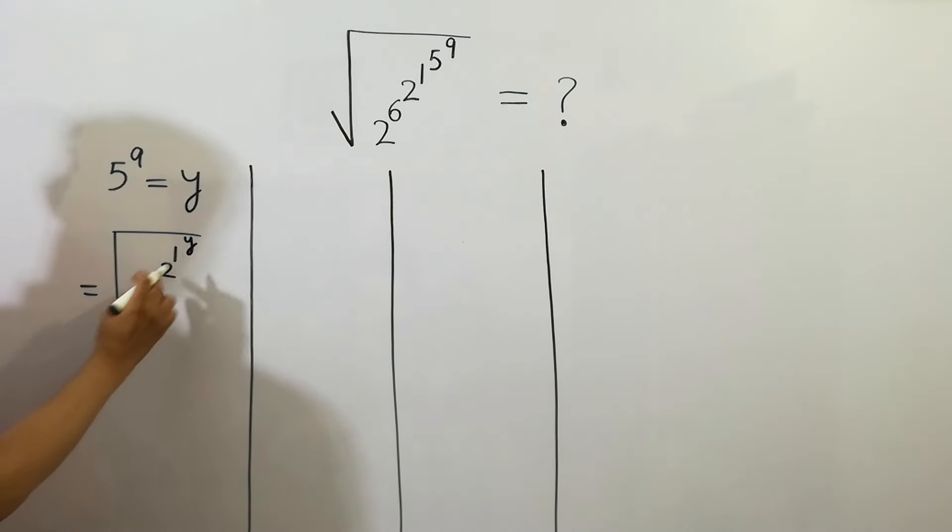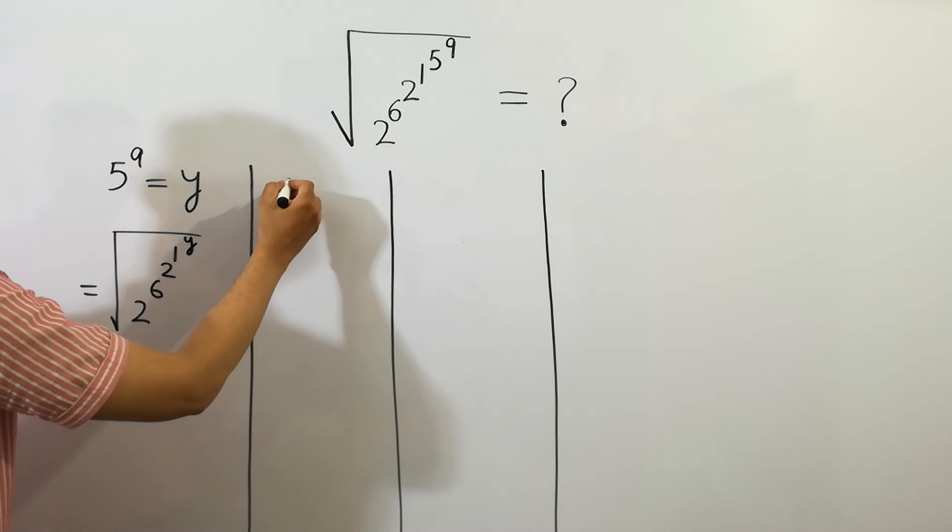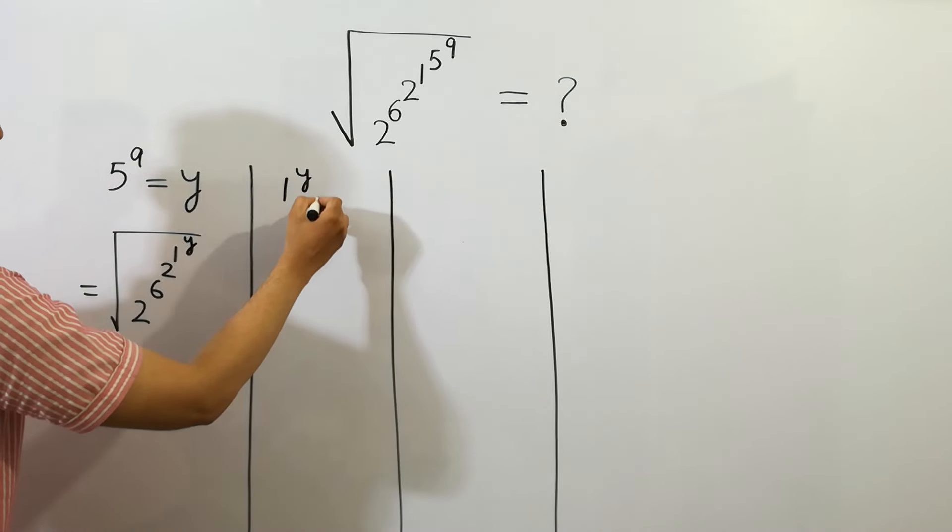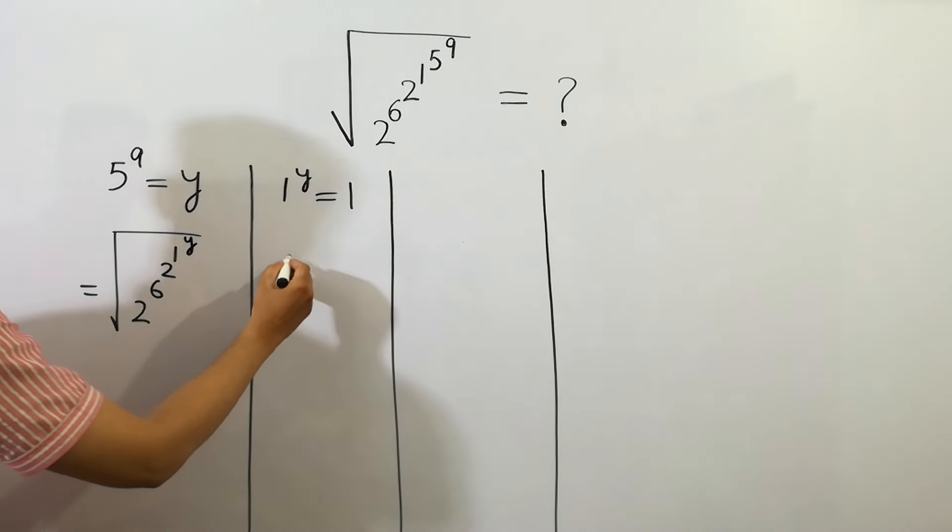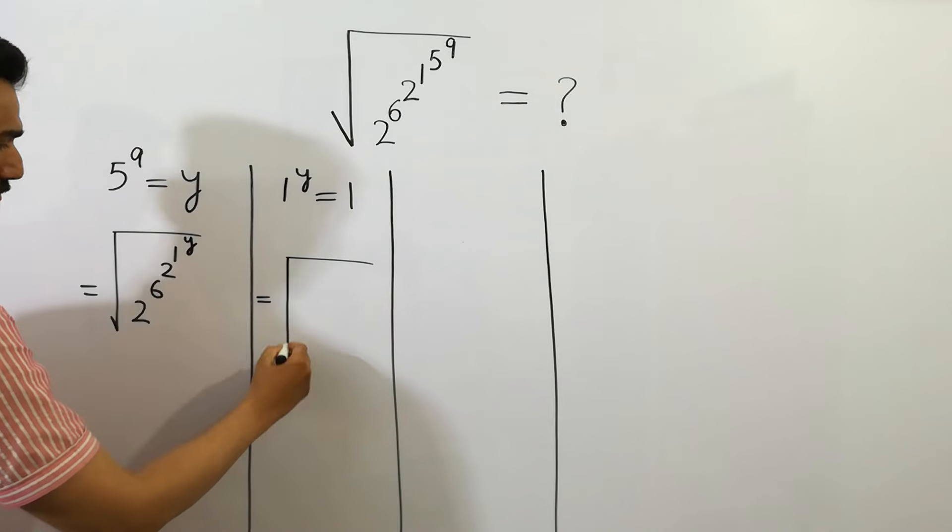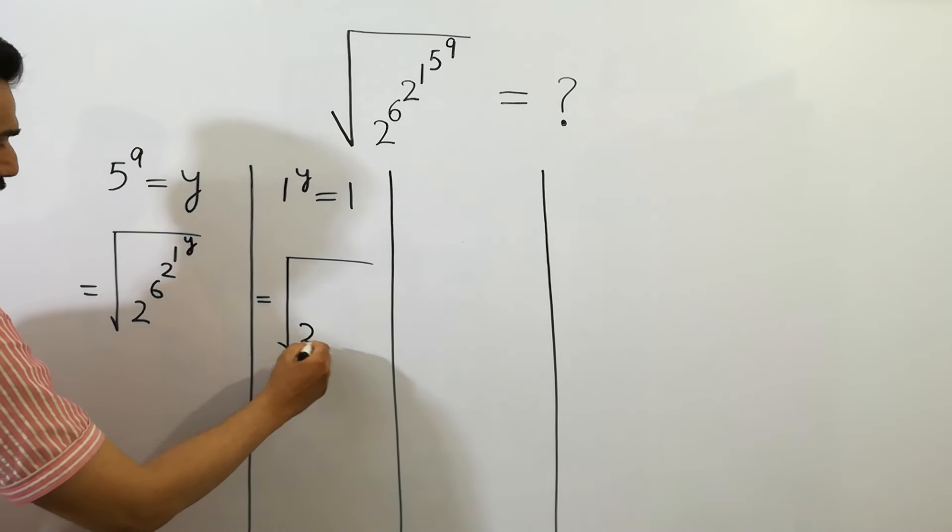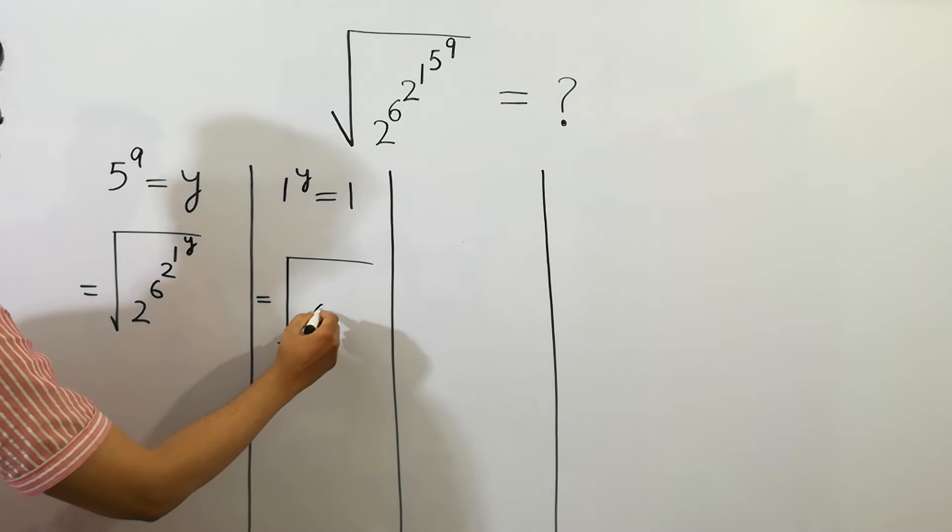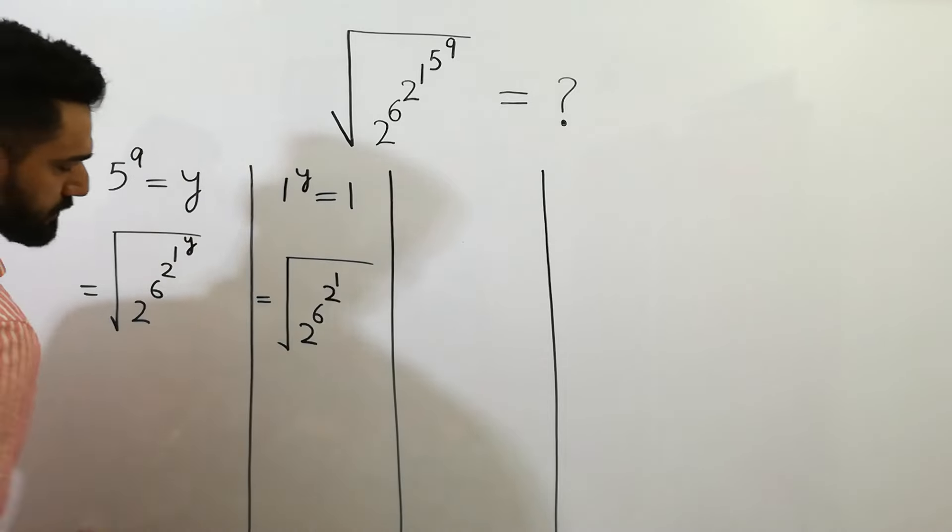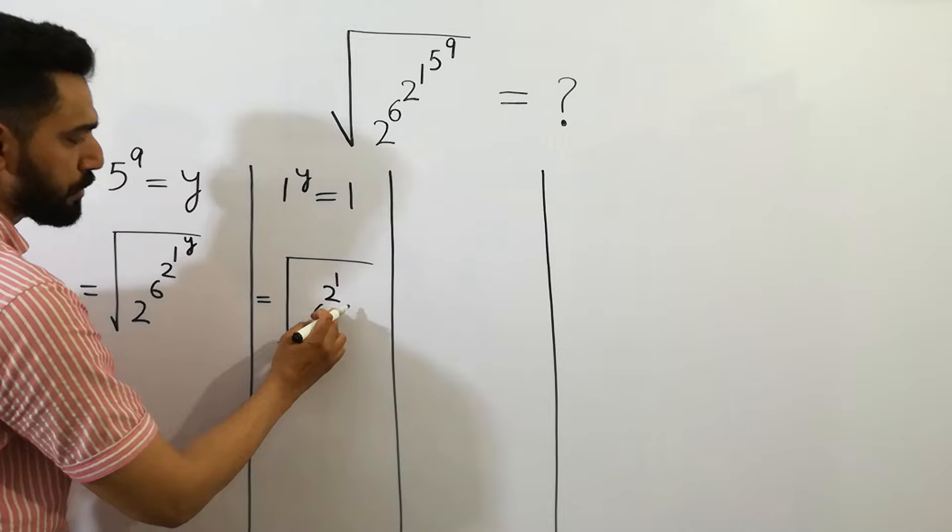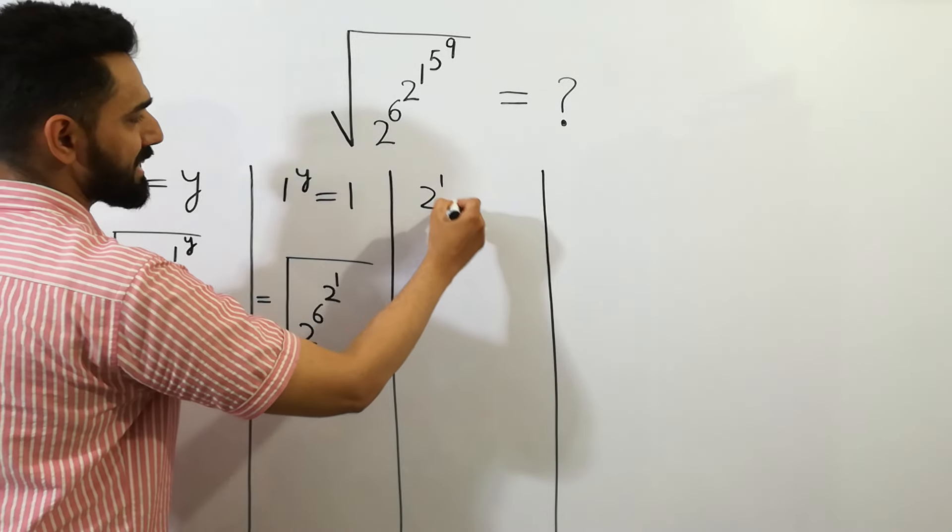In the next step, 1 to the power y equals 1. So we can write here, 2 to the power 6 to the power 2 to the power 1. And 2 to the power 1 equals 2.